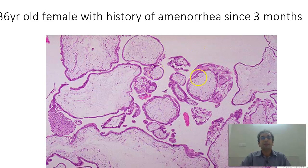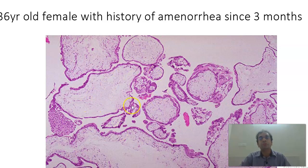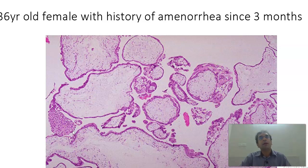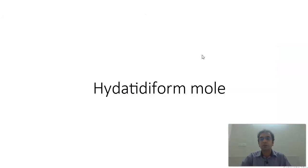A very common slide in the MBBS exam is a 36-year-old female with history of amenorrhea of 3 months. Usually this patient will have passage of grape-like vesicles. What you find here are voluminous, huge chorionic villi with hydropic change, with cytotrophoblastic and syncytiotrophoblastic proliferation which is circumferential all over. We do not find nucleated RBCs — it is more or less circumferential trophoblastic elements. This is a hydatidiform mole of the complete type.